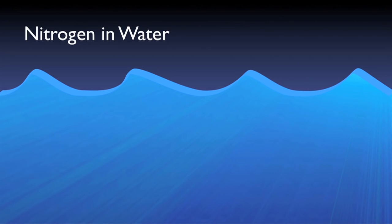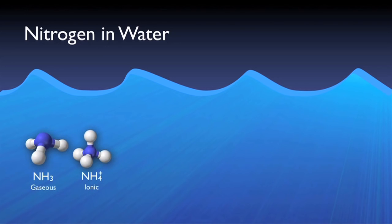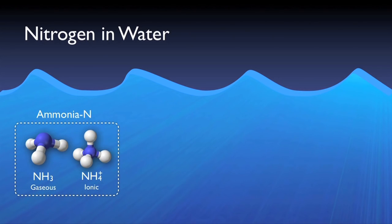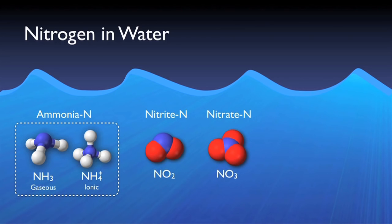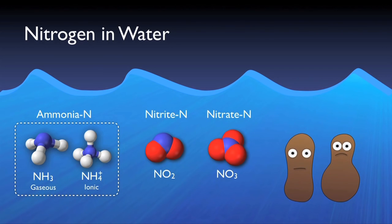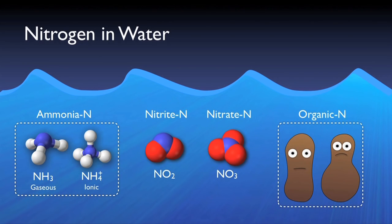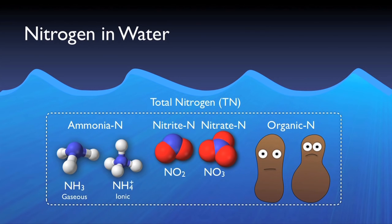Nitrogen is present in wastewater in various forms which have been lumped into separate general categories. Nitrogen in the form of ammonia is ammonia nitrogen. There is also nitrite nitrogen and nitrate nitrogen, which are usually formed during the actual biological processes at the wastewater treatment plant. In addition, nitrogen makes up a small percentage of the cell mass of the organisms in the system, as well as other dissolved organic compounds. This category is referred to as organic nitrogen, of which a certain amount typically cannot be removed through biological processes. Total nitrogen, as the name implies, is the sum of all types of nitrogen.